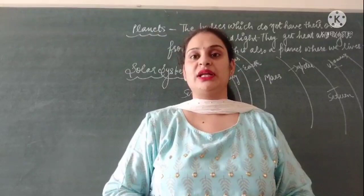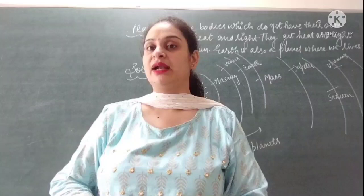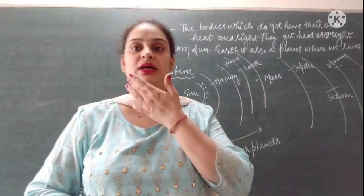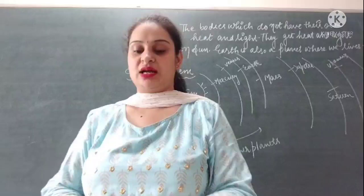We discussed the question: if the sun is a star, then why is the sun brighter than the stars which appear at night? The answer to that question was distance — due to the distance between the sun and the stars, we came to know about the difference in brightness and heat of the sun compared to other stars. Now we are going to start with the next topic of our chapter, which is planets.